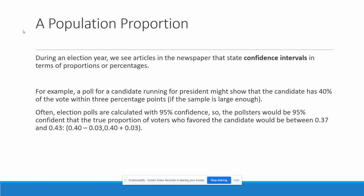Think about if you watch election night — they'll give who's winning by percentages, but they'll also show the percentage of polls reporting. That has a bigger impact than the candidates' percentages, because it's showing you how much of the sample is included. As more polls start reporting and that number gets bigger, the accuracy of the candidates' percentages increases.